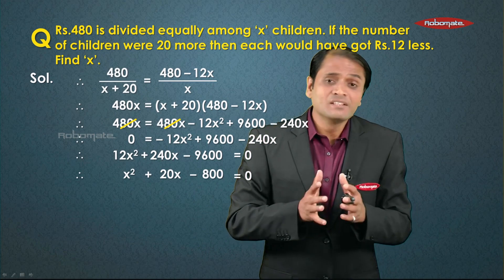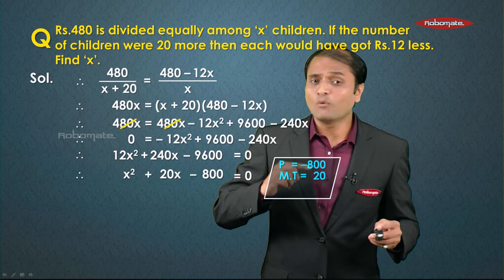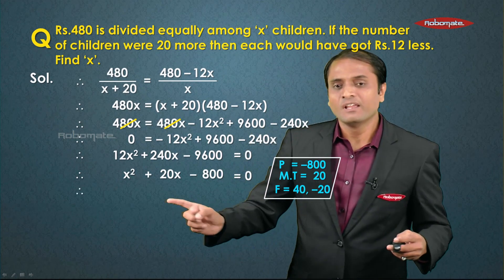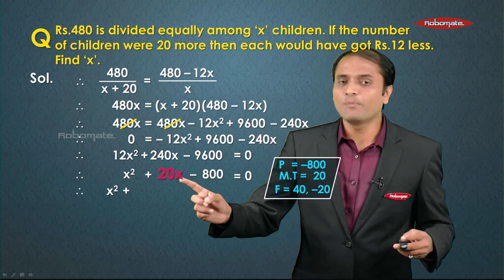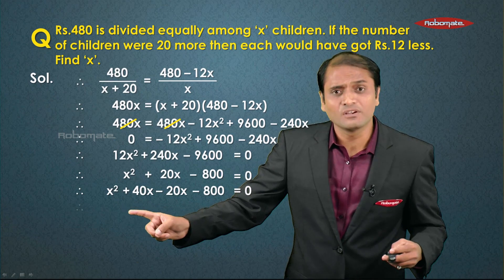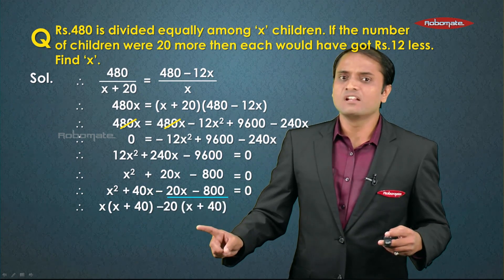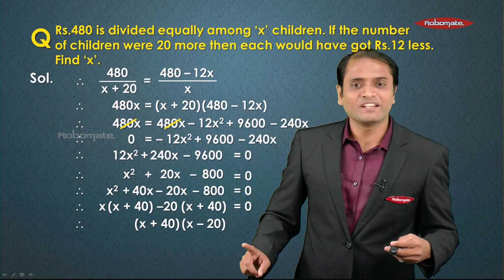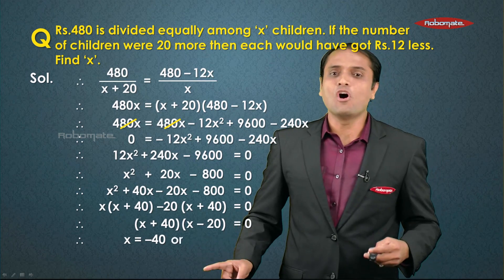We solve by splitting the middle term. The product is minus 800 and the middle term is plus 20. Factors of minus 800 that add to plus 20 are 40 and minus 20. So x² plus 40x minus 20x minus 800 equals 0. Taking x common from the first two terms gives x(x plus 40), and minus 20 common from the last two gives minus 20(x plus 40), so (x plus 40)(x minus 20) equals 0.